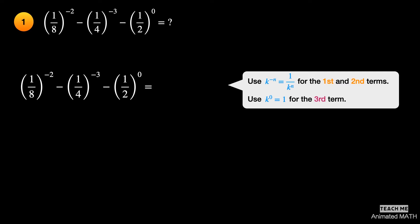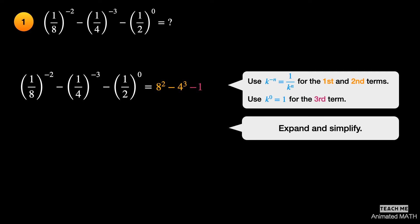Use the fourth property for the first and second terms because they have negative exponents. Use the first property for the third term since its exponent is zero. Eight squared is 64, four cubed is 64, and the total sum is equal to negative one.